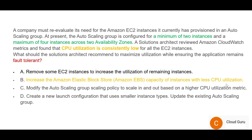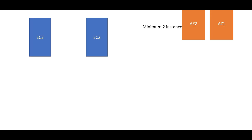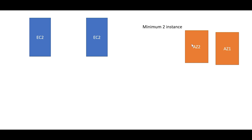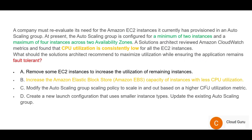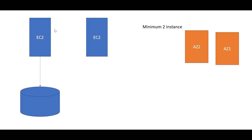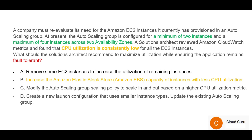For Option B: each EC2 instance has an underlying block store to save data. But if the CPU percentage is already low, increasing block store capacity won't help. Even if you add more storage, it will not address the CPU utilization issue — so B is wrong. Option C says: modify the auto scaling group to scale in and out based on high CPU utilization metrics.